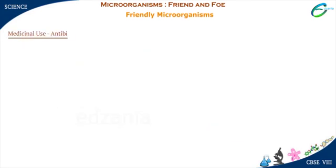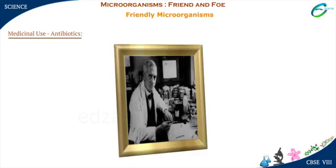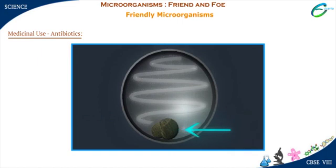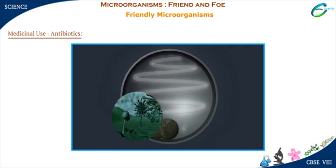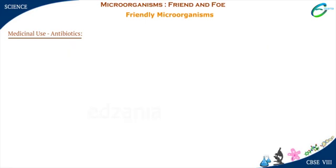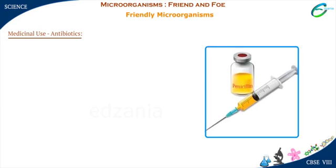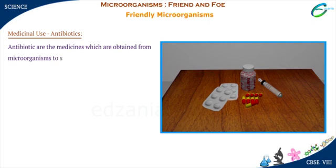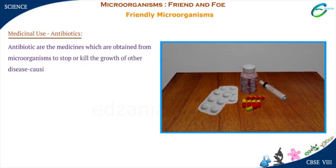Medicinal Use: Antibiotics. In 1929, Alexander Fleming discovered a wonderful quality found in some microorganisms. He found a green mold in one of the culture plates while working on a disease-causing bacteria. He observed that the green mold prevented the growth of bacteria he was working on, and also killed these bacteria. The green mold was of Penicillium notatum. He extracted an antibiotic, Penicillin, from it.